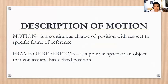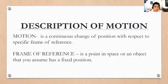Motion is a continuous change of position with respect to a specific frame of reference. A frame of reference is a point in space or an object that you assume has a fixed position.